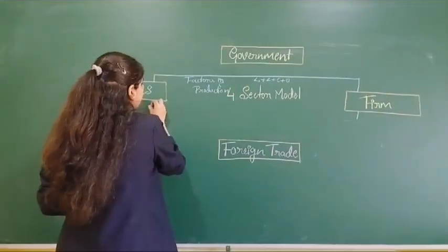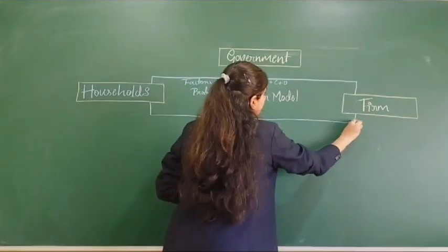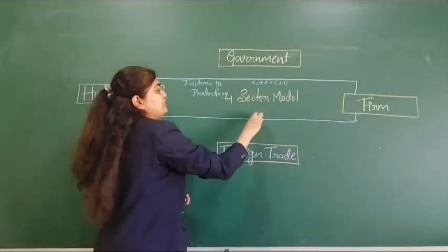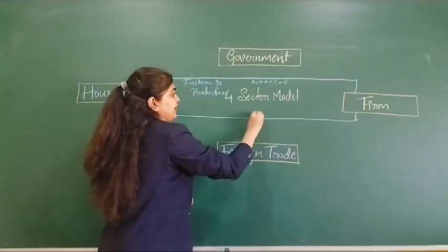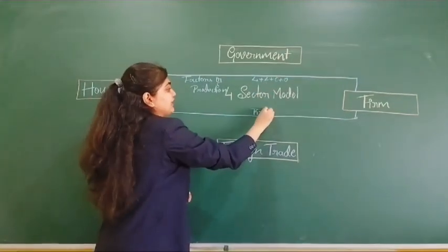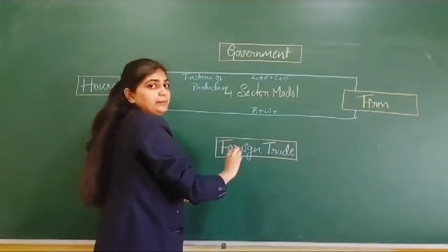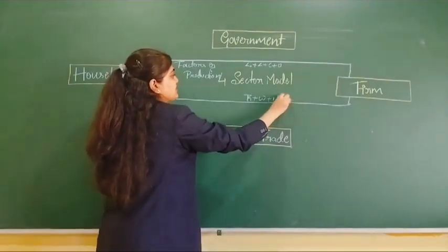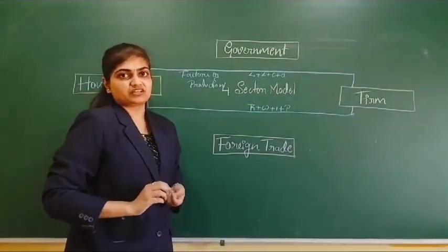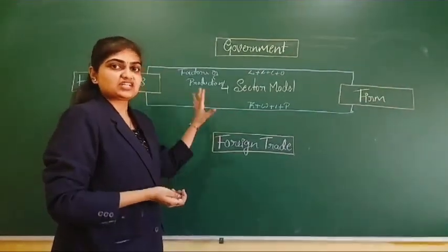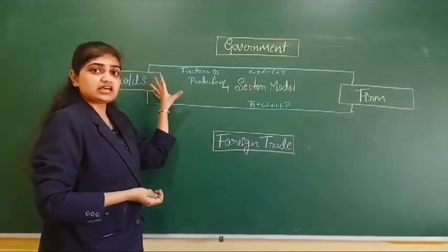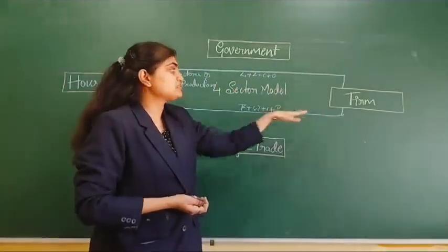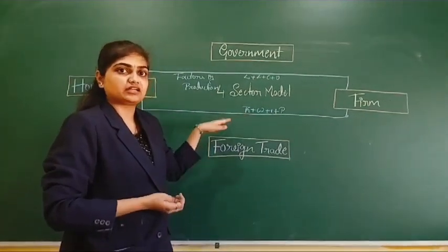For providing these factors of production, households are getting some returns — some income. If they give land, they will get rent. If they give labor, they will get wages. If they give capital, they will get interest. If they give organization, they will get profit.